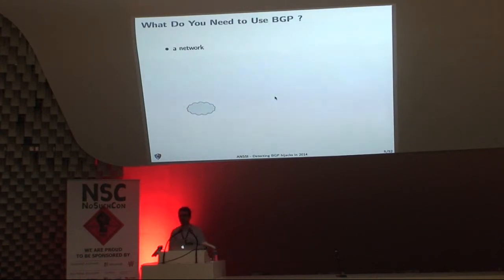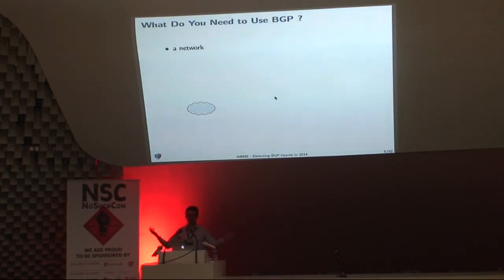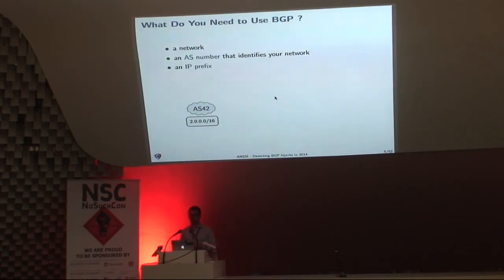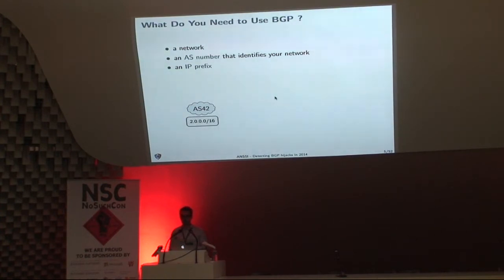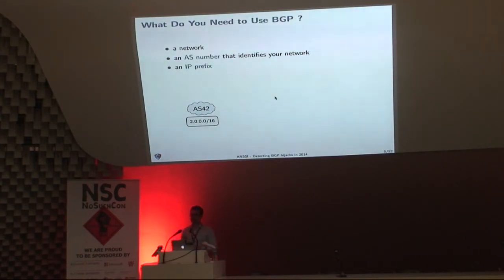So what do you need to play with BGP? First, you need a network — it could be anything, a laptop or a lot of servers. You also need what we call an Autonomous System number, or AS number, which is a unique identifier of your network on the internet. For example, Orange, the French ISP, is not just 'Orange' — it's Autonomous System number 3215. You will also need an IP prefix — in this case we have a large one, a /16.